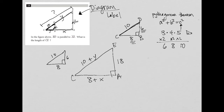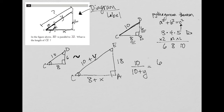I know that angle E is congruent to angle D, and both triangles share angle C — which means I have two similar triangles. Anytime I have similar triangles, I can use proportions. The ratio of the smaller triangle's hypotenuse to the larger triangle's hypotenuse must equal the ratio of the vertical side of the small triangle to the vertical side of the larger triangle.